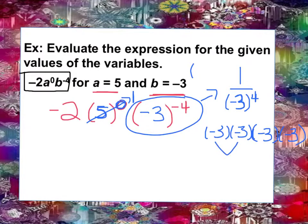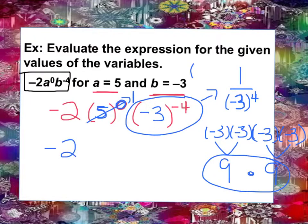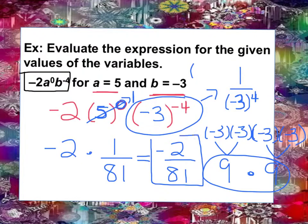So negative 3 times negative 3 is 9. Negative 3 times negative 3 is 9, positive 9. And 9 times 9 is going to give us 81. So I'm going to rewrite my expression now as negative 2 times 1 over 81. And since I put negative 3 in with parenthesis my final answer should not be negative. And then I'll multiply it across so I get negative 2 divided by 81. And here is my final answer.